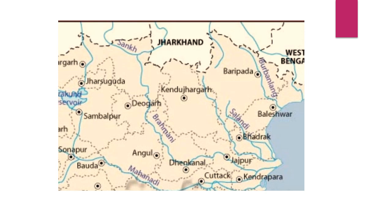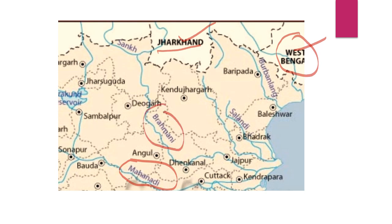Now you can see the river map of Odisha. In the north-east side, West Bengal is situated; in the north portion, Jharkhand is situated. There are so many rivers flowing through Odisha. This one is Mahanadi, and after it, this river is Brahmani, which is formed by the confluence of Sankh and Koel. This river is Vaitarani, and Salandi is its prominent tributary. This river here is called Budha Balang, which mostly flows through two districts — Mayurbhanj and Balasore — and then flows into the Bay of Bengal.